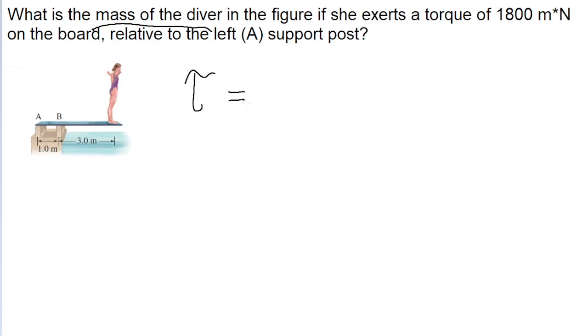Torque can be calculated by taking the force being exerted on the rotational object, which in this case is the diving board, and then multiply that by the distance we are from the pivot point, or the point we're measuring relative to, which the problem tells us is point A, the leftward post.